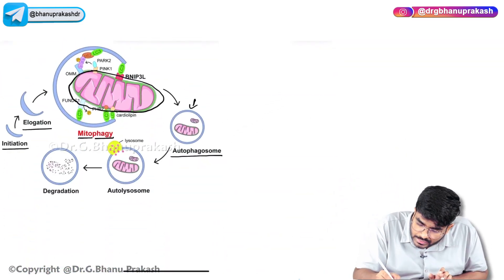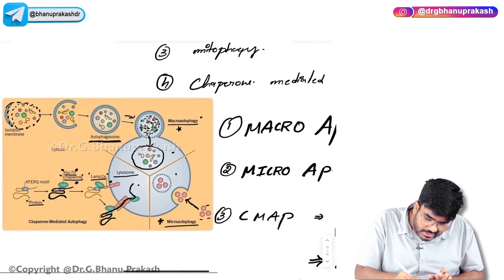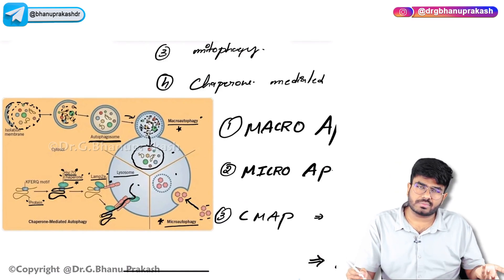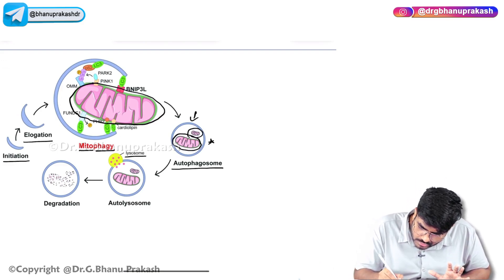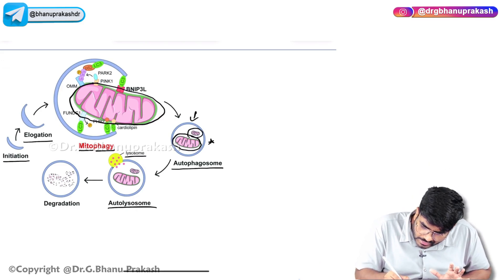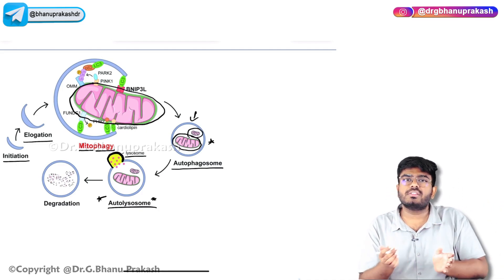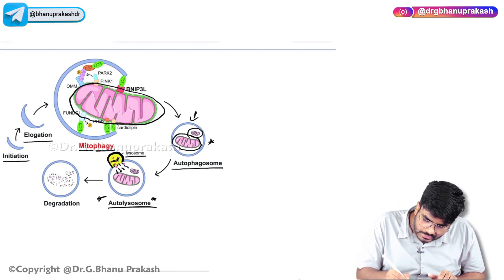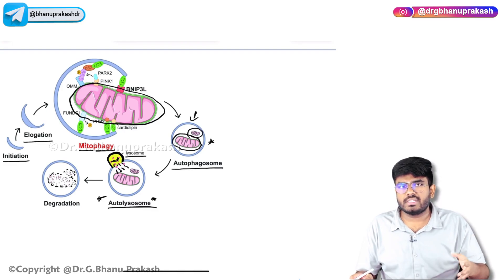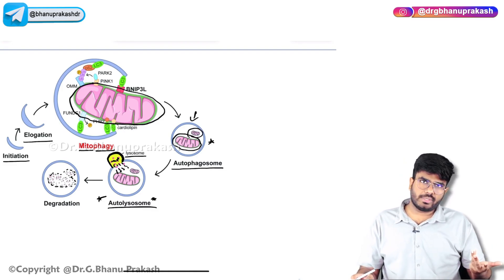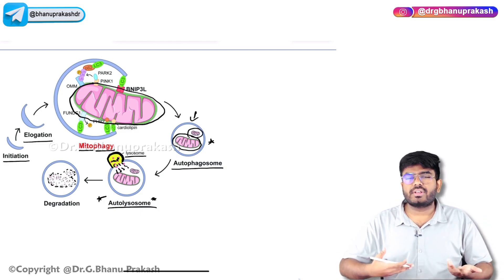In this autophagosome, only mitochondria are present. In macro autophagy, multiple proteins and multiple cell organelles — different substances — can be present. But in mitophagy, it is preferentially only mitochondria. The autophagosome is going to bind with the lysosome to form an autolysosome. Hydrolytic enzymes are released, leading to degradation of the mitochondria. Proteins are released and involved in the production of ATP. During severe starvation and malnutrition conditions, your body is eating your own organelles for the production of energy.